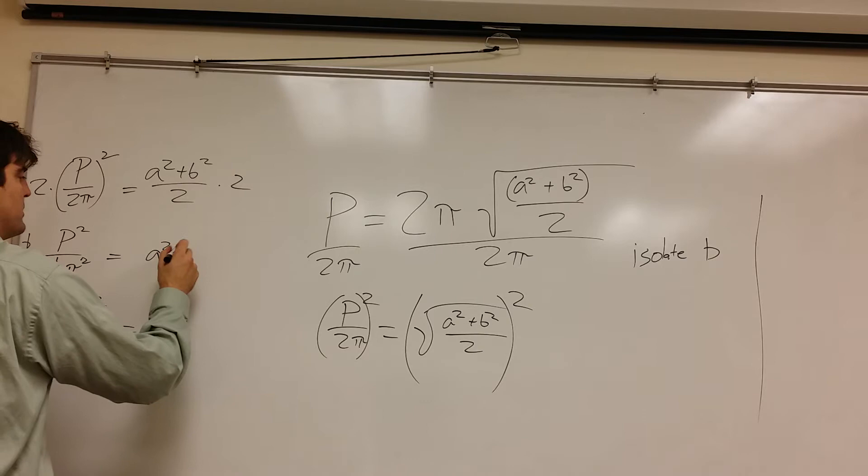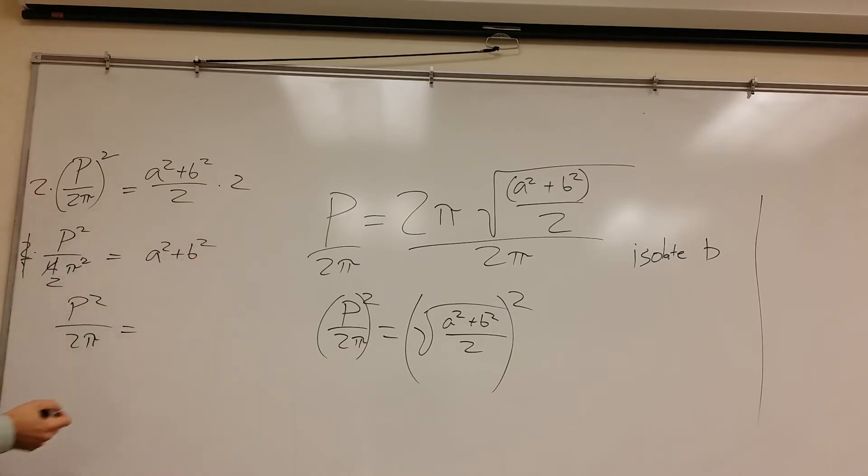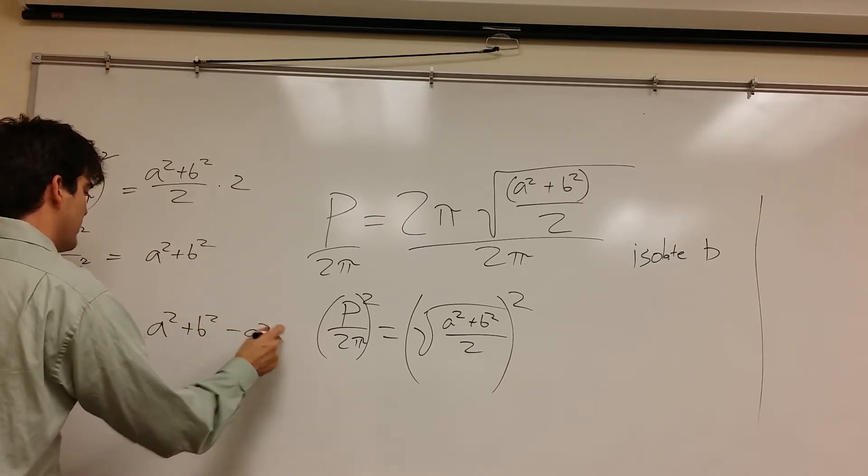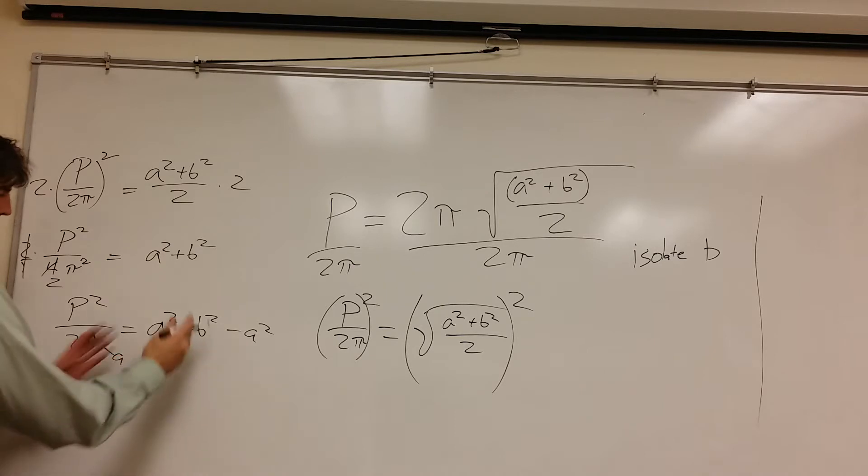This was A plus B, A squared plus B squared. Okay. Let me go ahead and move down. So now I want to get A squared off this side. That's the next part of the onion that needs to go.